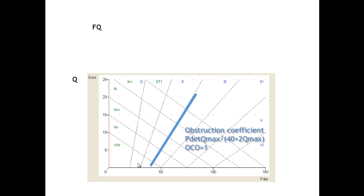The obstruction coefficient index OCO-1 was published as a line defining the boundary between non-obstructed and obstructed men. In a given male population, P-det-max was related to twice Q-max plus 40 — that is the blue line, representing the boundary of obstruction in that particular male population.